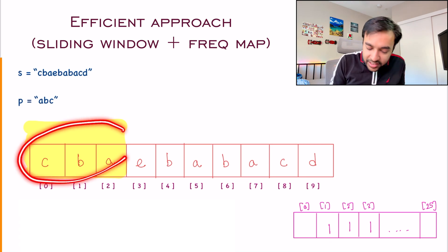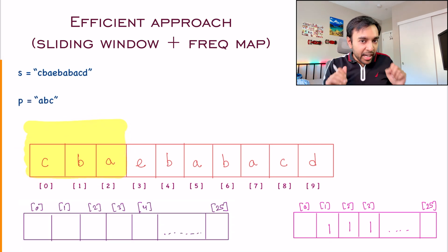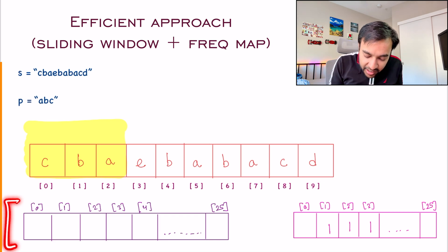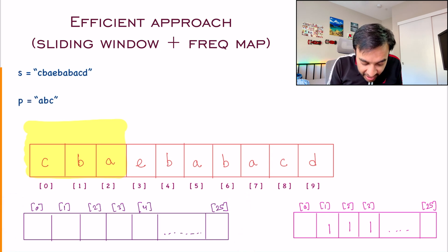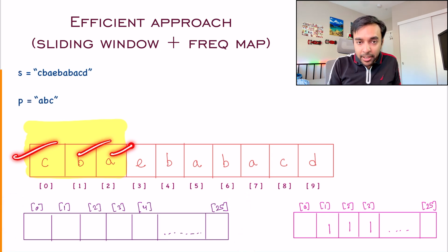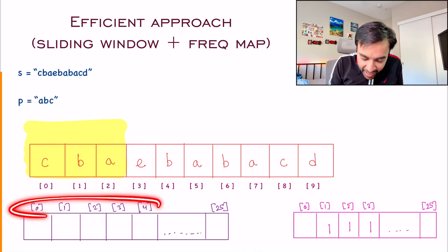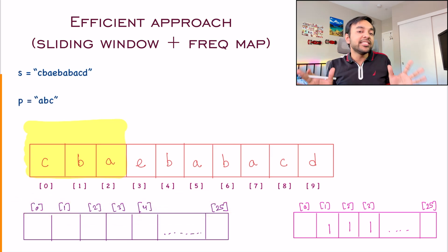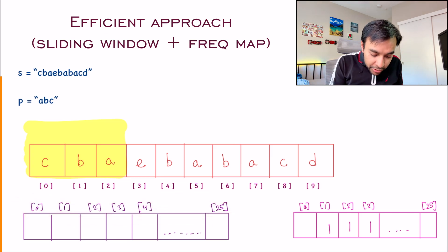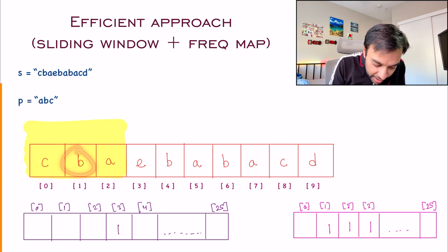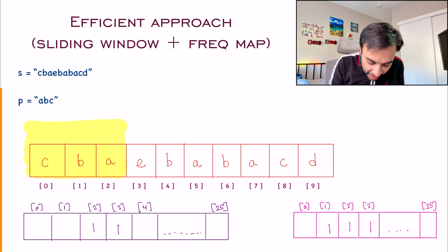But how do you leverage it? Think about a sliding window. This is my current window. I create one more frequency map for my window. Currently I have these three characters available and notice I will have the 26 indexes again. So I see a C that means I add a one here, then I see a B, I add a one here, then I see a A and then I add a one here. My sliding window is complete.